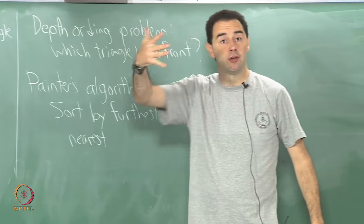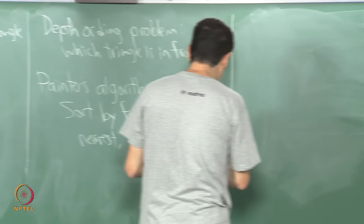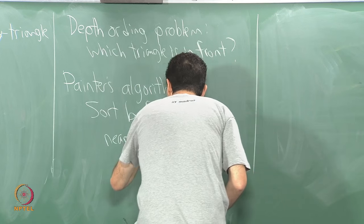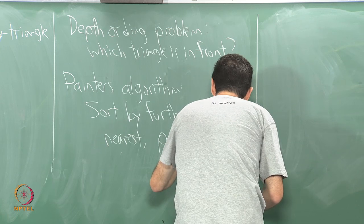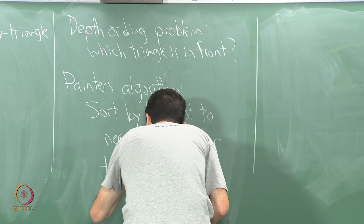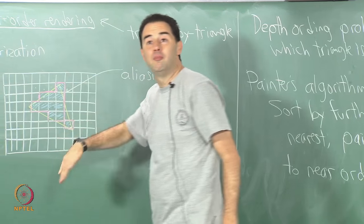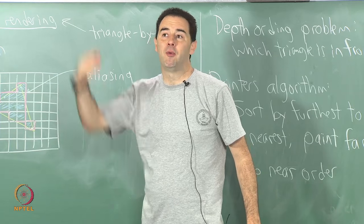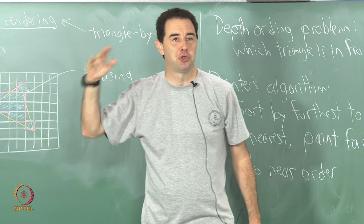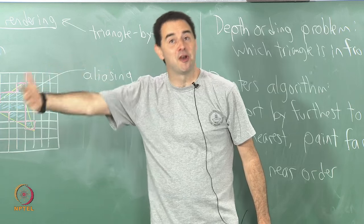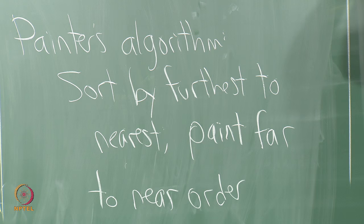Sort from furthest to nearest with respect to the eye, then paint — do the rendering — in far-to-near order. That sounds really easy. I can just loop over all my triangles, start with the ones furthest away, and if I render the closer ones later, the whole thing should work. I just overwrite whatever I have rendered before and do not worry about it. This makes a very simple loop for going through and rendering everything correctly.